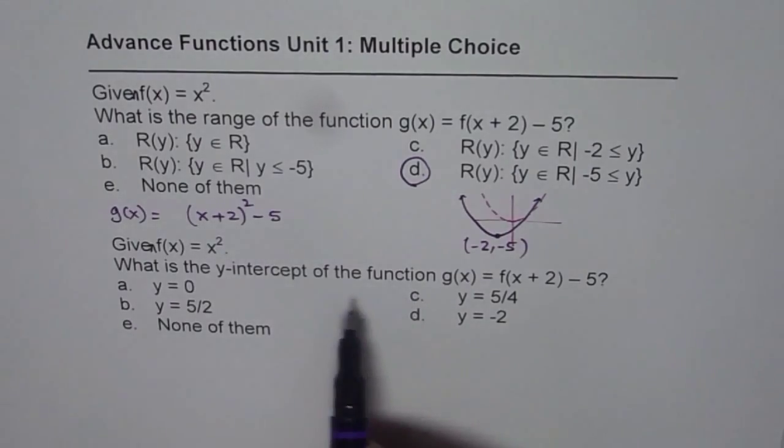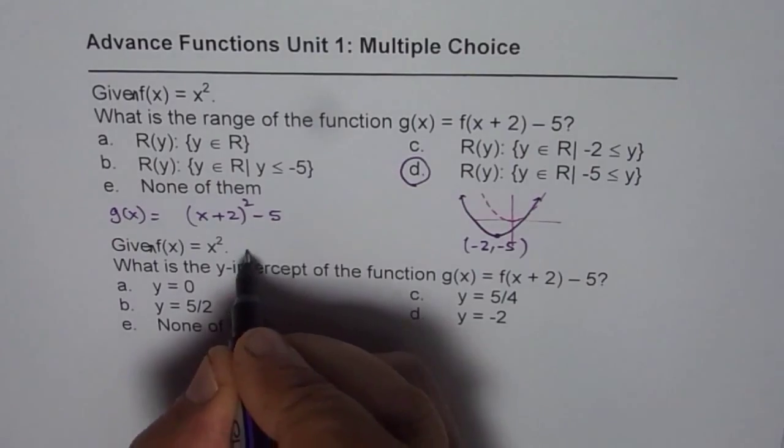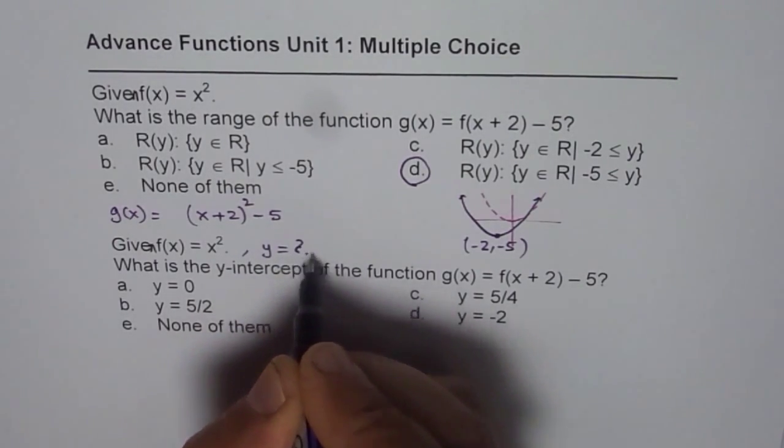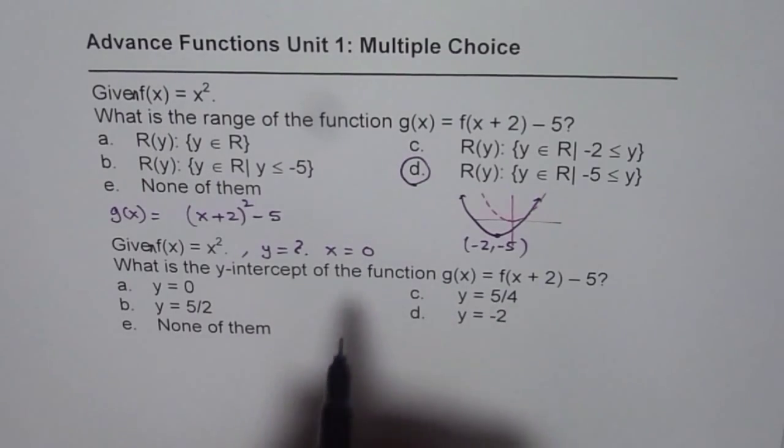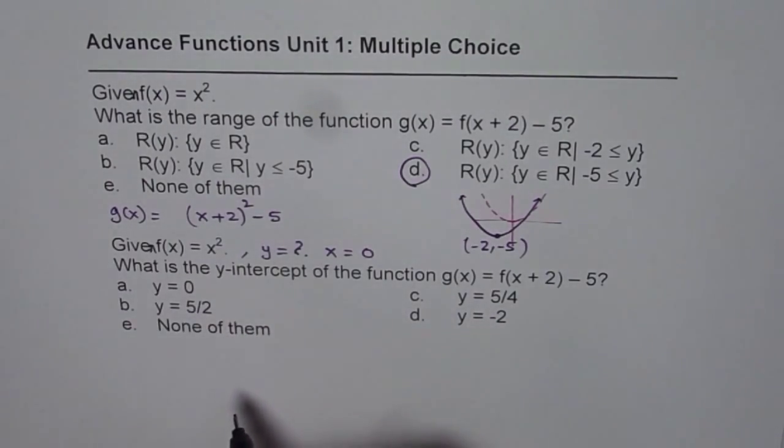When we say y-intercept, that means we are trying to find what y is for x = 0. So, we need to equate x = 0 and find g(x).